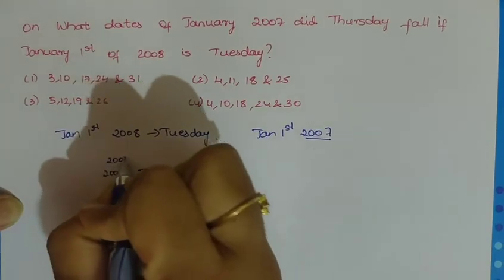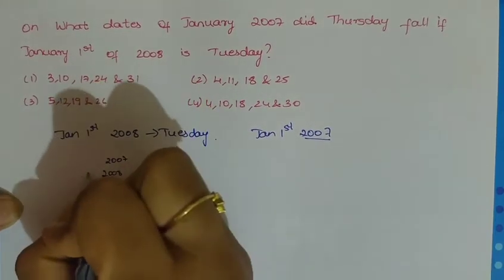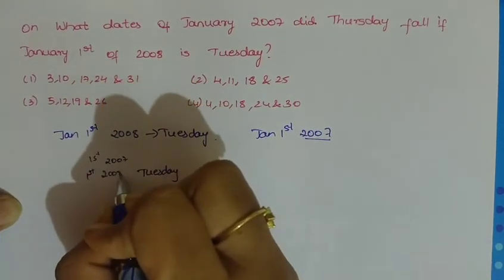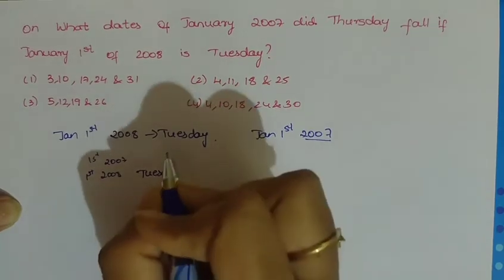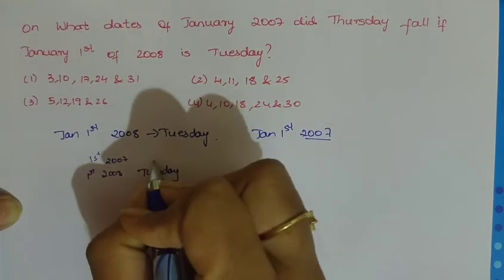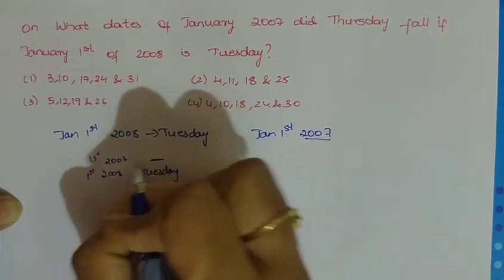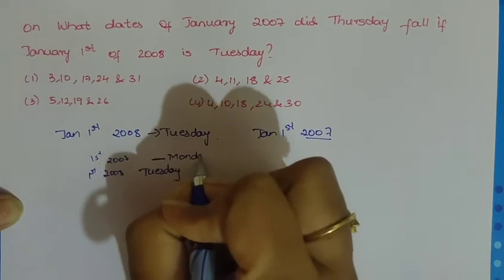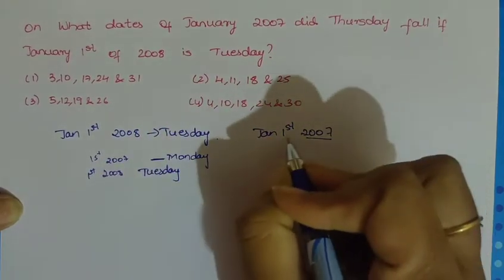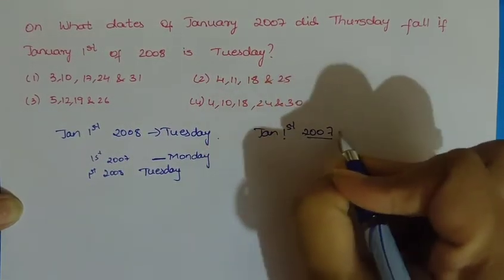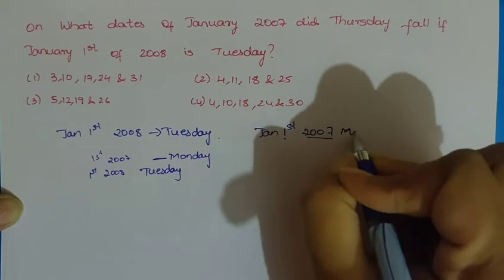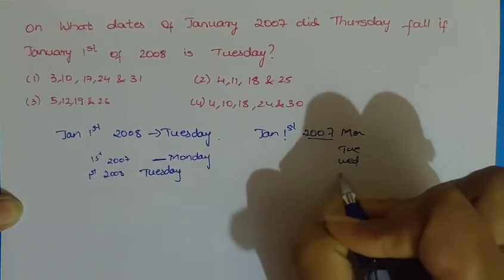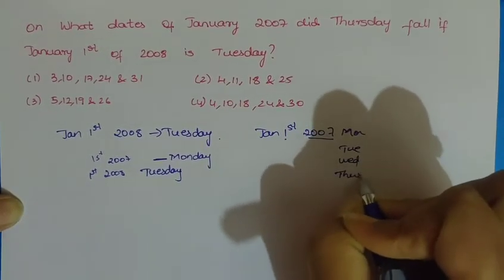Working back to January 1st 2007, January 1st will be Monday. So from Monday: 2nd is Tuesday, 3rd is Wednesday, and Thursday follows next.